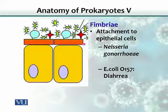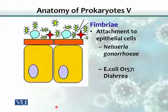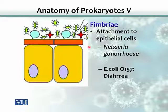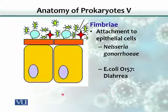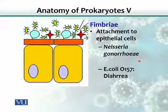Similarly, bacteria use fimbriae to attach to epithelial cells when infecting the body — they must attach first to invade or enter cells. Examples include Neisseria gonorrhoeae, which causes gonorrhea in humans and infects the reproductive system, and E. coli O157, which causes diarrhea by attaching to the cells of the intestine.